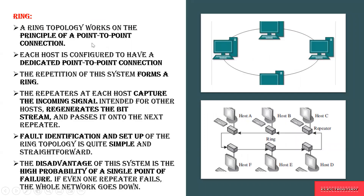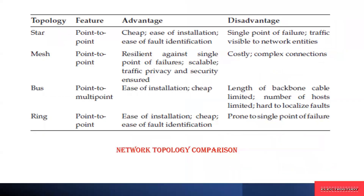Ring topology works on the principle of point-to-point connection. The ring forms a ring shape, and data is transferred from one node to another — either in one direction or through another path around the ring. Each host is dedicated to one connection, and based on repeaters it forms the shape of a ring. Fault identification and setup of the complete topology is simple. The one disadvantage is a high chance of failure — if one link fails, data cannot be sent through that pathway and the complete host chain fails.